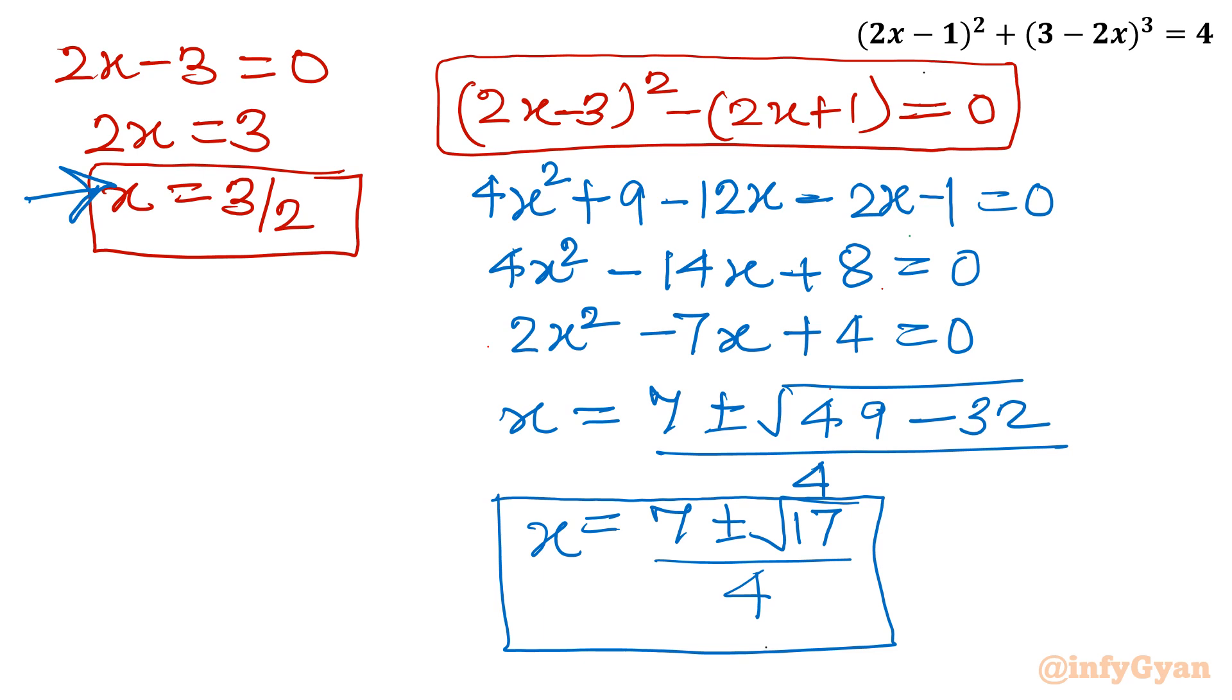Let us consider Method Number 2. It is the method of substitution. So what substitution we should give? 2x - 1 or 2x only. So let me consider 2x = t. You can substitute 2x - 1 also equal to t.